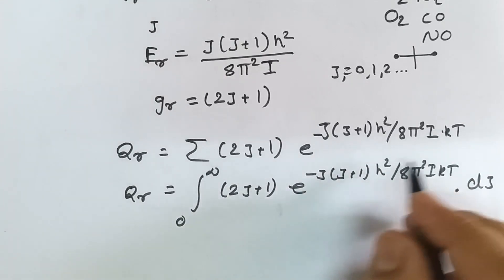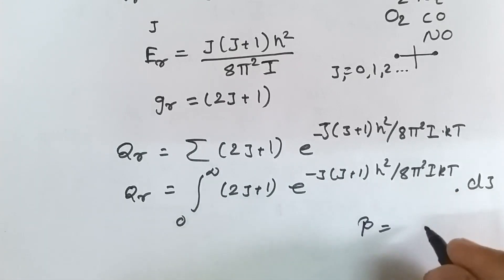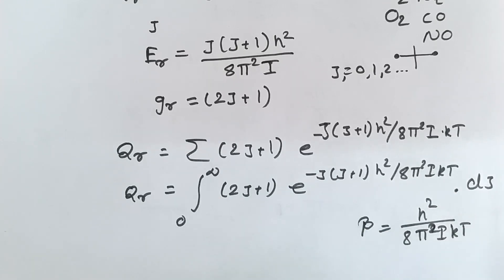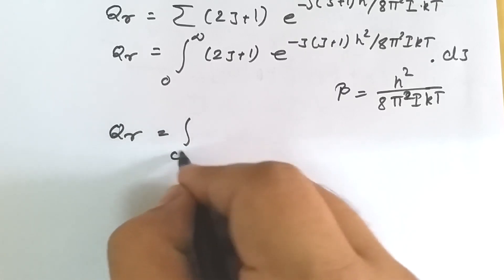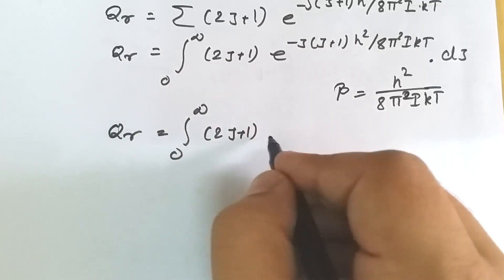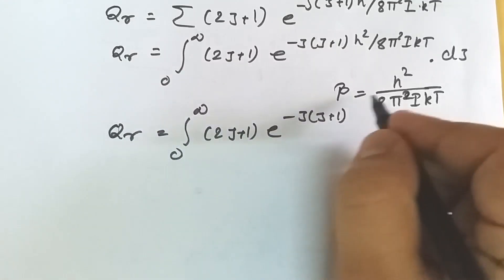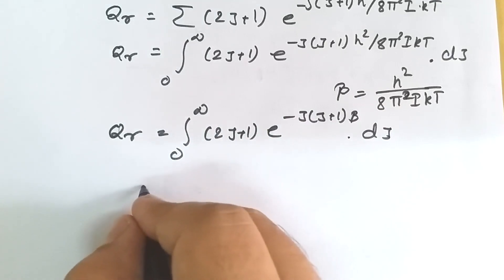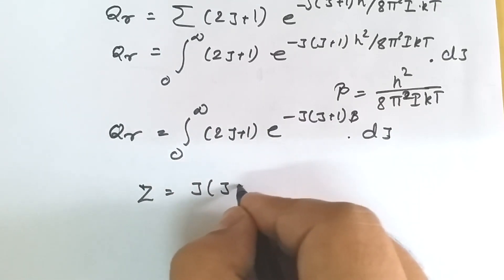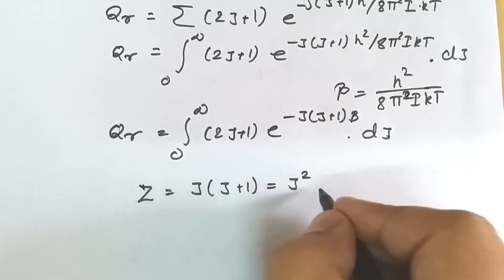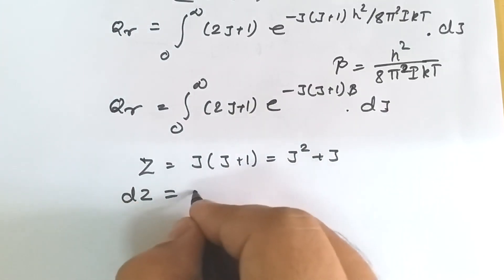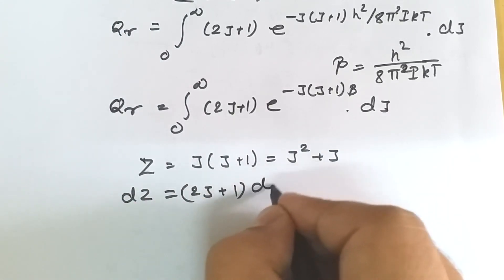We take all constant terms and set beta = h²/(8π²IkT). So our equation becomes qr = integral from 0 to infinity of (2j+1) × e raised to minus j(j+1)·beta dj. Now we make the substitution z = j(j+1) = j² + j. Differentiating, dz = (2j+1) dj.